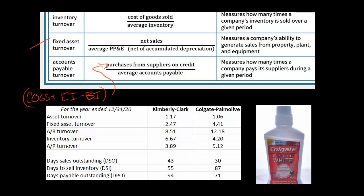If you're giving up a significant discount by not paying on time, that's worth considering, but it isn't necessarily a bad thing that Kimberly-Clark has taken longer to pay their suppliers than Colgate-Palmolive — Kimberly-Clark's suppliers might not be too happy, but that's the tradeoff. So the advantage in collecting receivables goes to Colgate-Palmolive, the advantage in selling inventory quickly goes to Kimberly-Clark, and Kimberly-Clark also has the advantage of an extra 23 days before they have to pay their suppliers compared to Colgate-Palmolive.